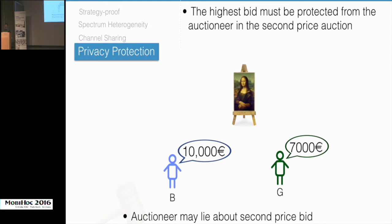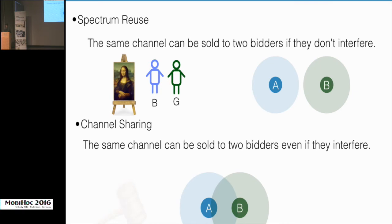The fourth property is privacy protection. In a strategy-proof second-price auction, the highest bid should be protected from the auctioneer. A rogue auctioneer who has access to all bids could lie and tell bidder B that the second-highest bid is 9,000 instead of 7,000, forcing B to pay more. This is why we need to protect the highest bids from the auctioneer. General auctions cannot be directly applied to spectrum — unlike typical objects, a channel can be sold to two non-interfering users, or even to interfering users if channel sharing is allowed.